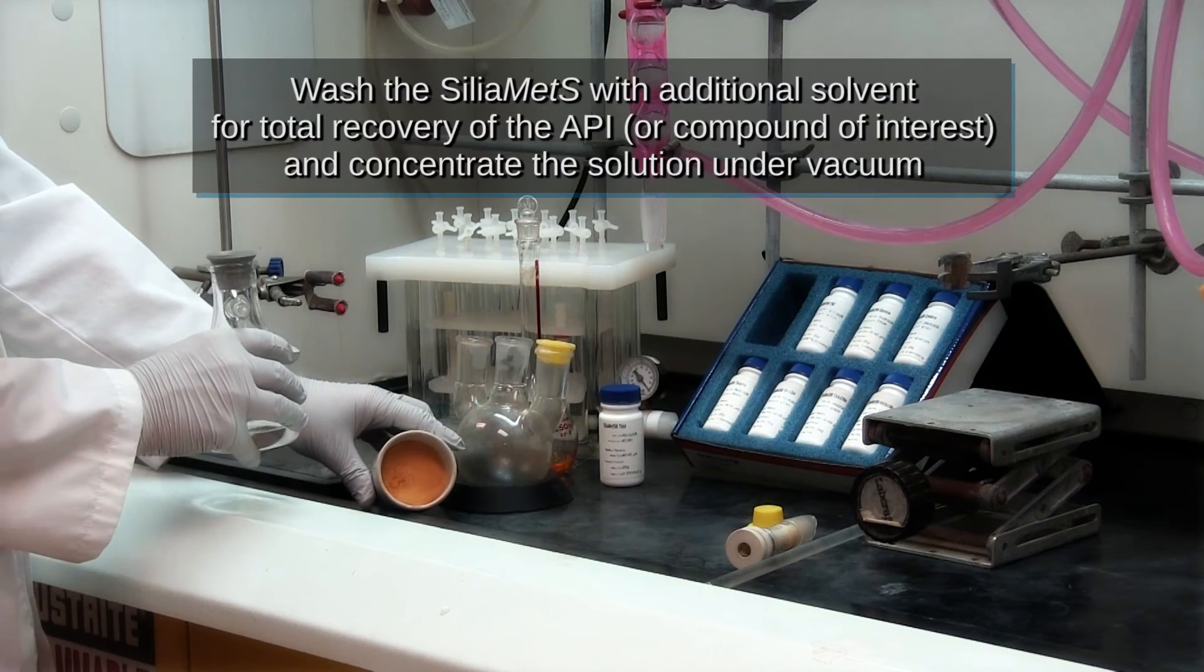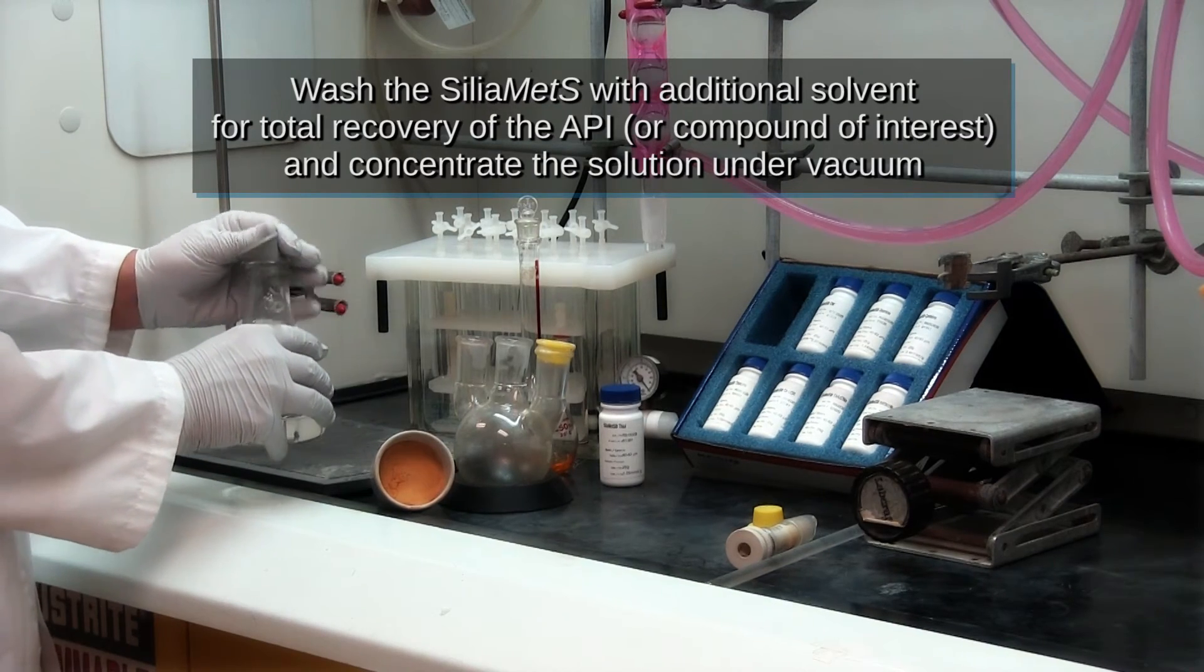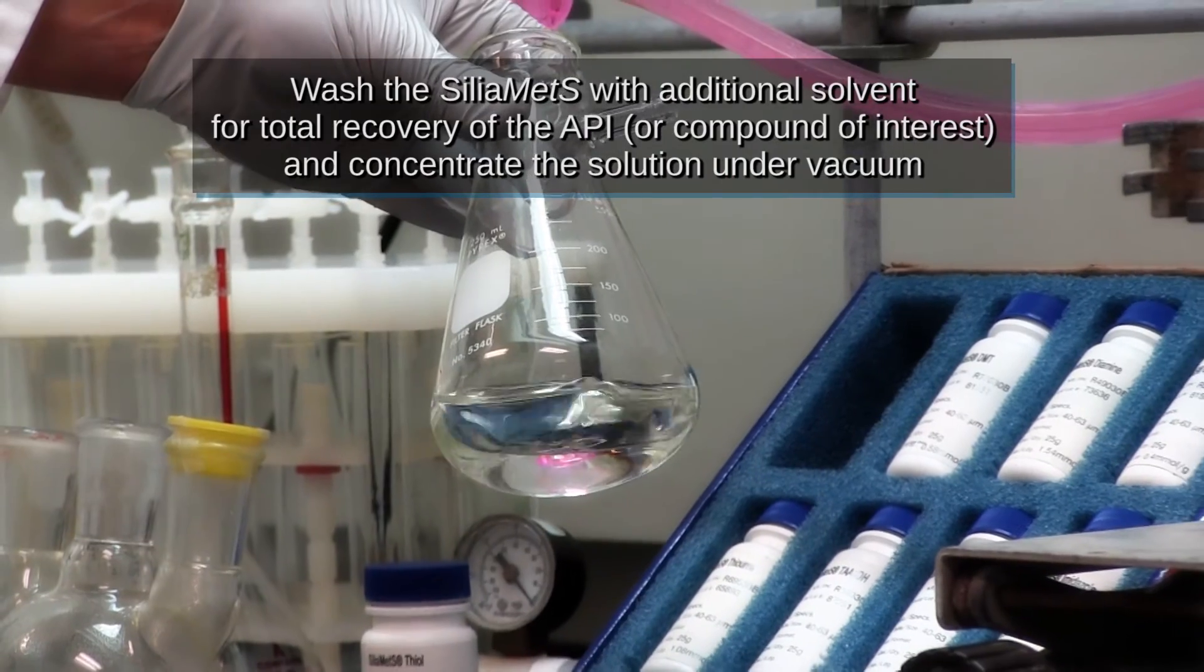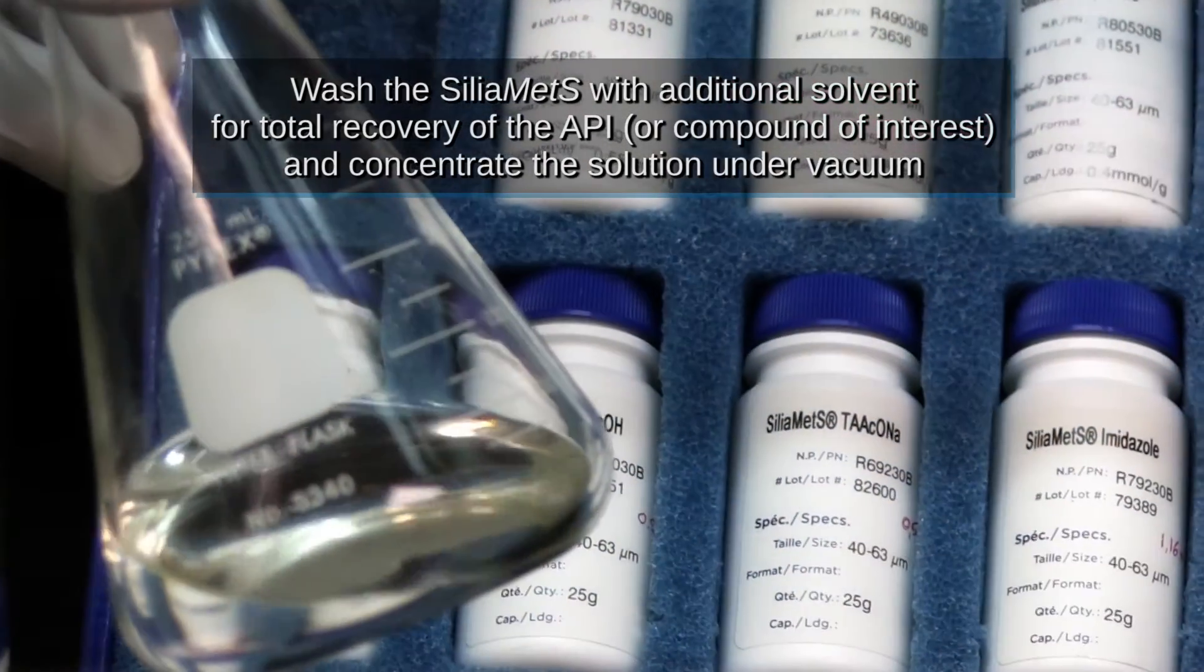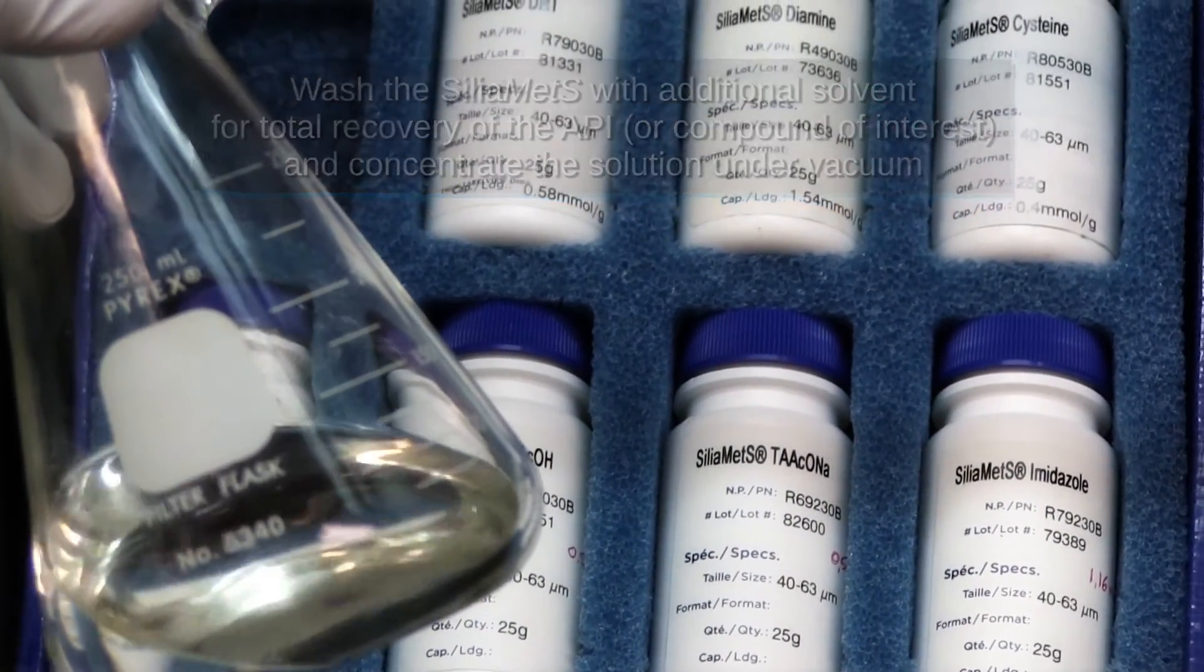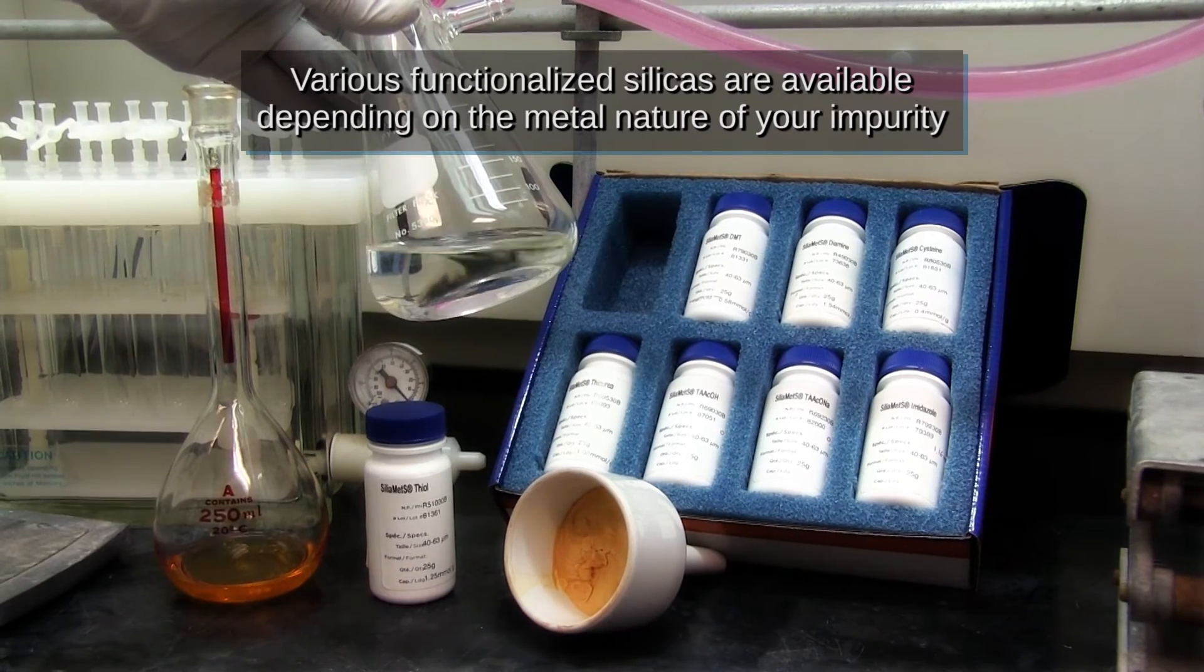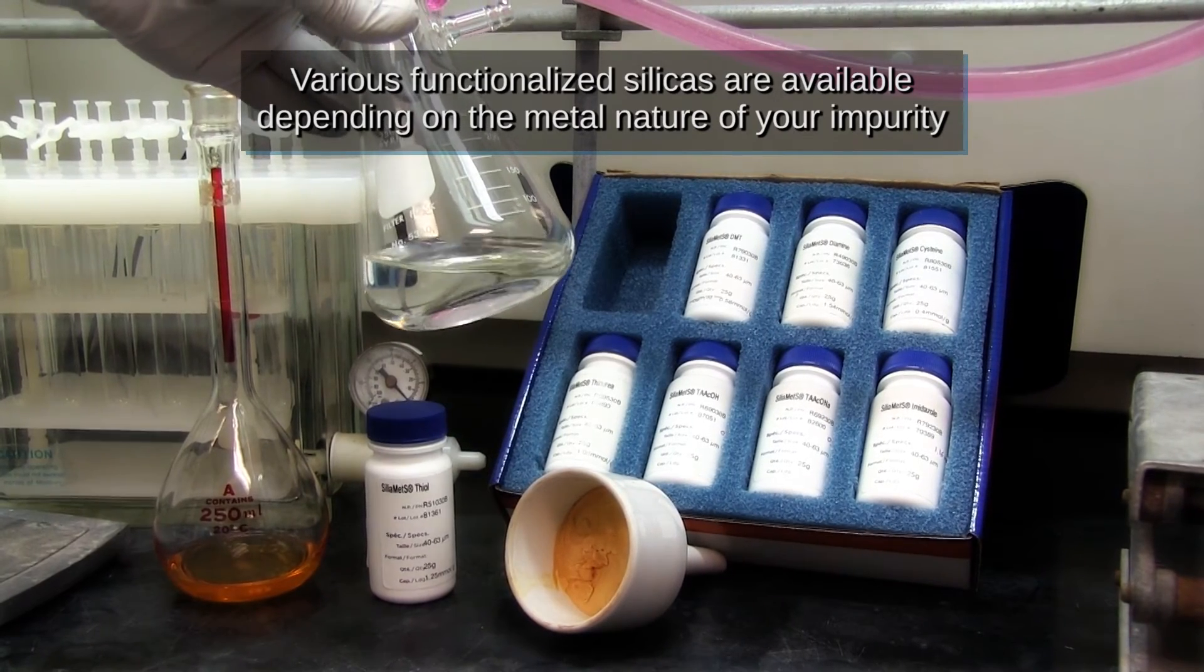Wash off the scavenger with additional solvent for total recovery of your API and concentrate the solution under vacuum. Various functionalized silicas are available depending on the metal nature of your impurity.